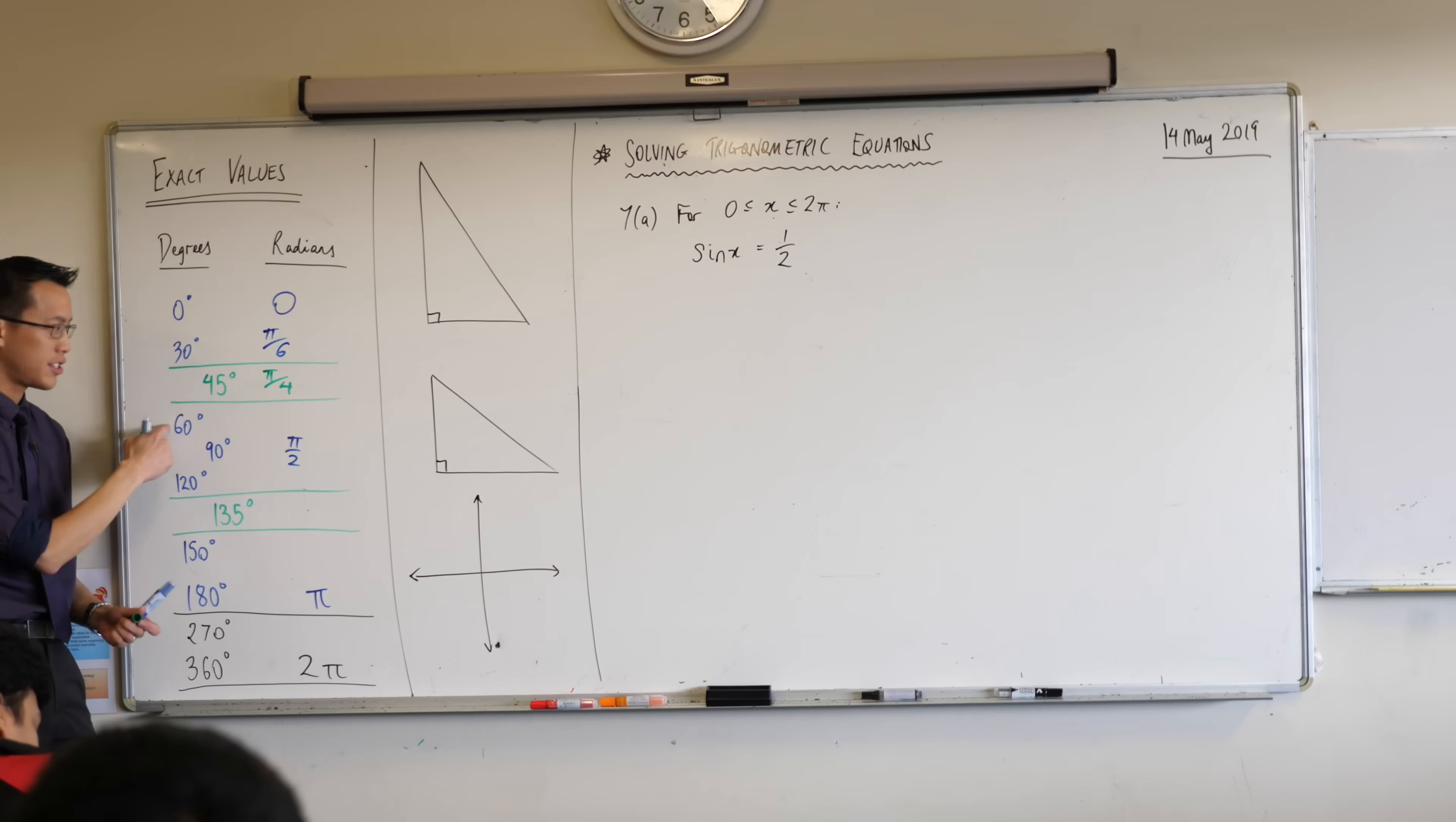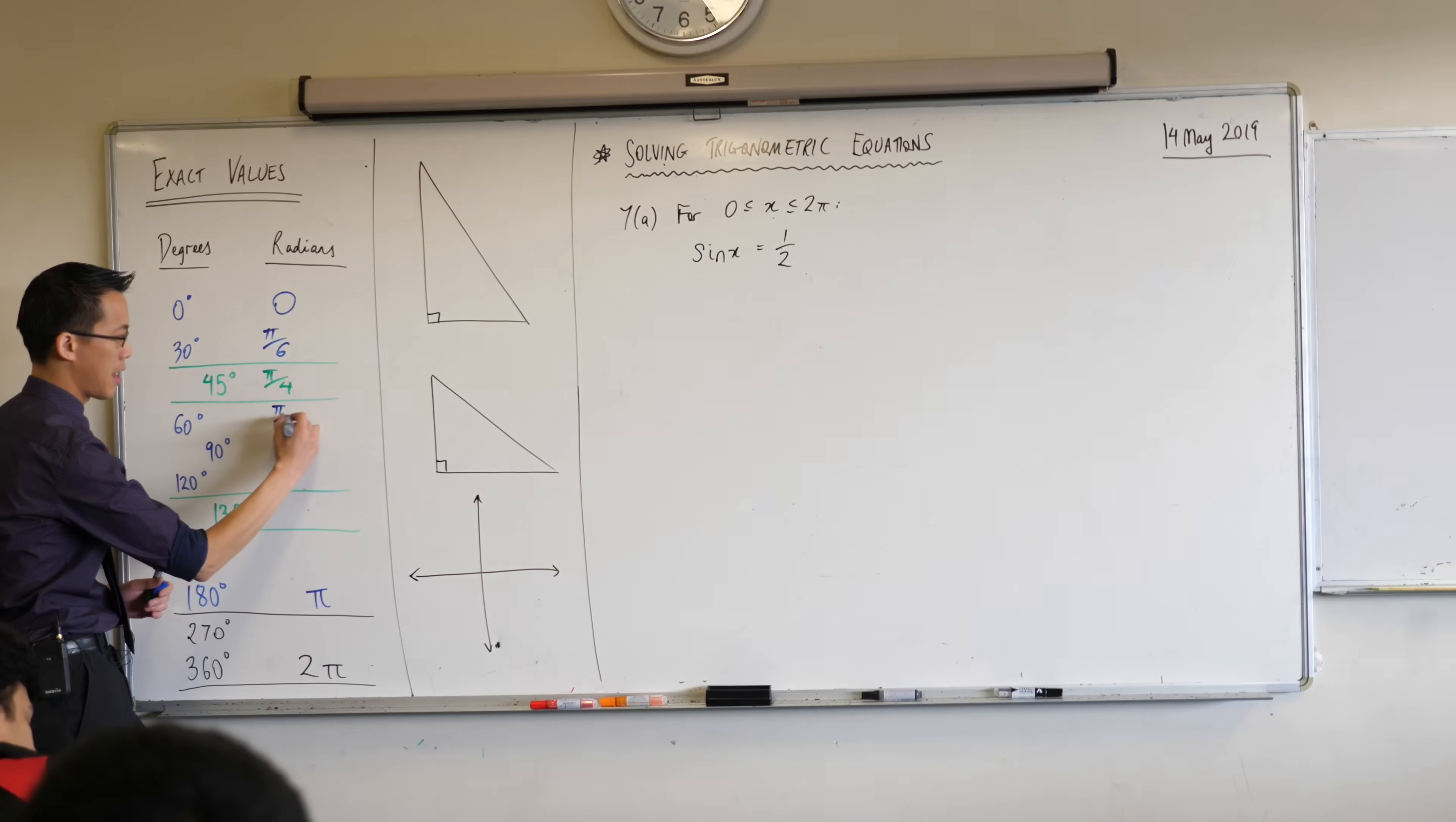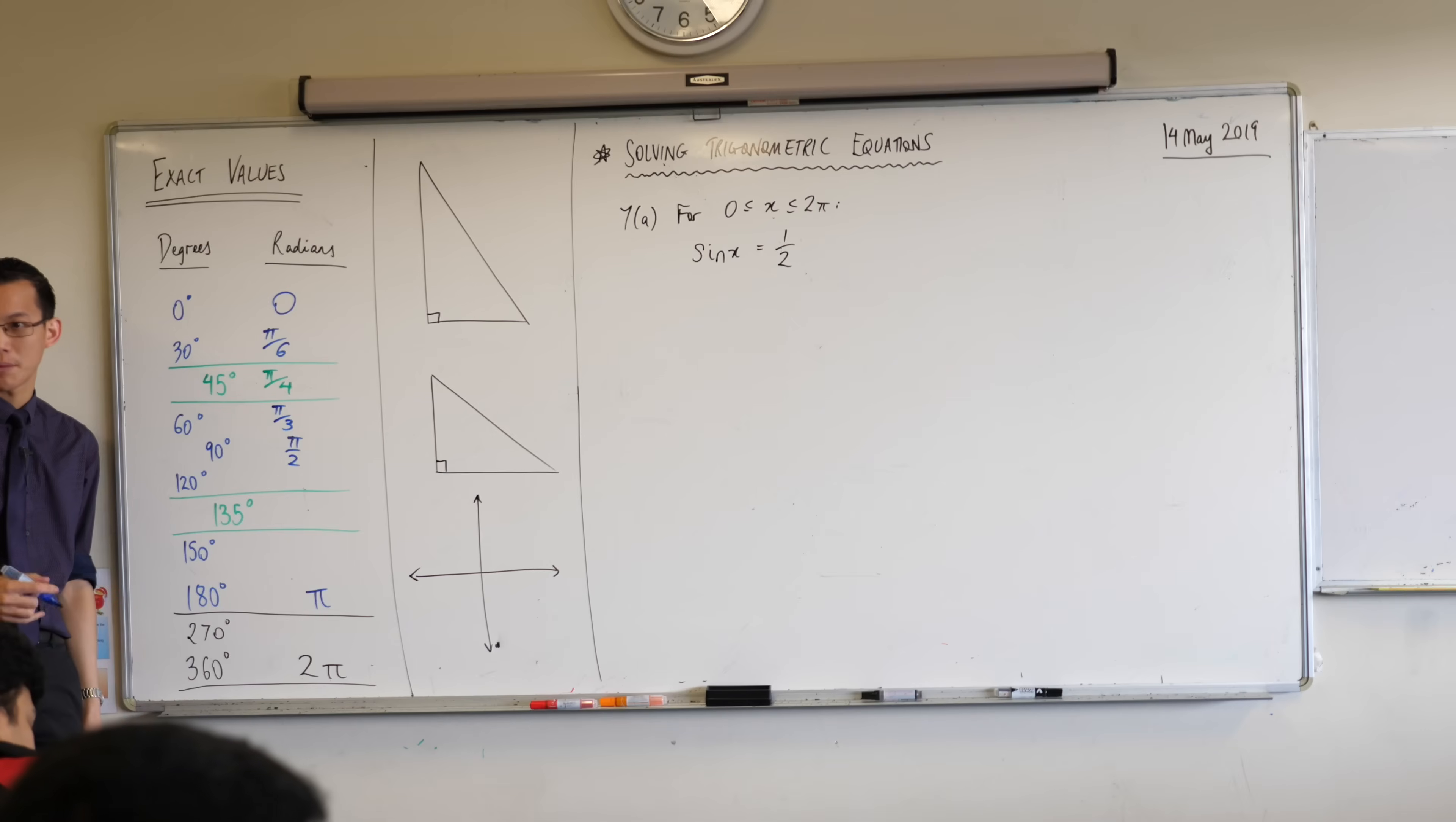Now when you go from 30 to 60 you're doubling. So instead of π/6 you'll get π/3. That's 2π/6. And hopefully you're noticing the way fractions work right? The denominator is getting smaller and smaller: 6, 4, 3, 2.